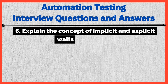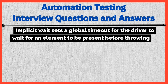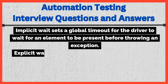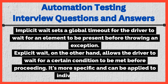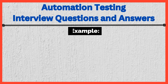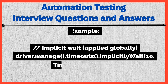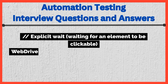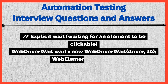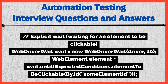Explain the concept of implicit and explicit waits in Selenium. Implicit wait sets a global timeout for the driver to wait for an element to be present before throwing an exception. Explicit wait, on the other hand, allows the driver to wait for a certain condition to be met before proceeding — it's more specific and can be applied to individual elements. Example: // Implicit wait applied globally: driver.manage().timeouts().implicitlyWait(10, TimeUnit.SECONDS); // Explicit wait — waiting for an element to be clickable: WebDriverWait wait = new WebDriverWait(driver, 10); WebElement element = wait.until(ExpectedConditions.elementToBeClickable(By.id("someElementId")));